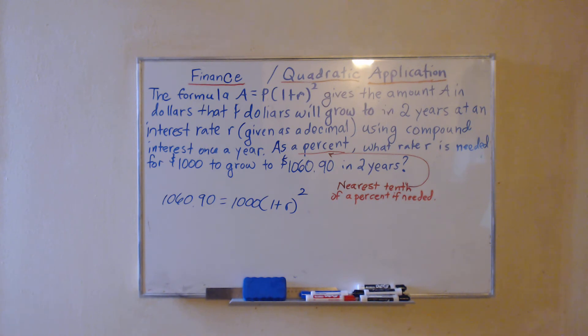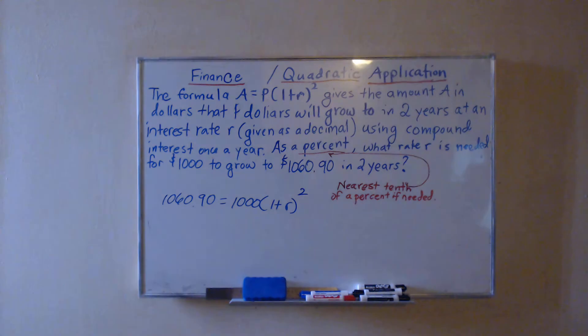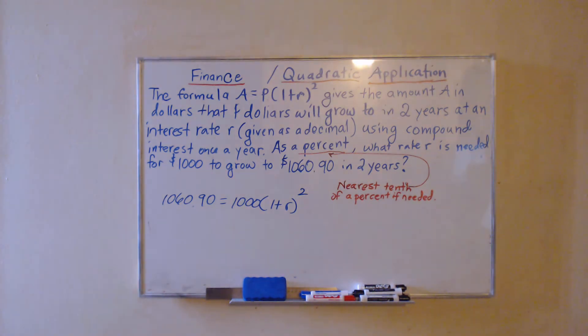Here's a quadratic application that connects to finance. We're putting in $1000 for the present value or principal, and $1060.90 for A, the amount that's also known as the future value that you want your investment to grow to. We're solving for the rate that it's going to take to get that $1000 to grow to $1060.90 in two years.